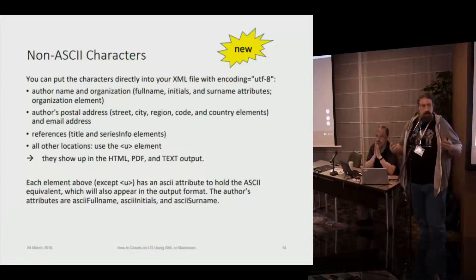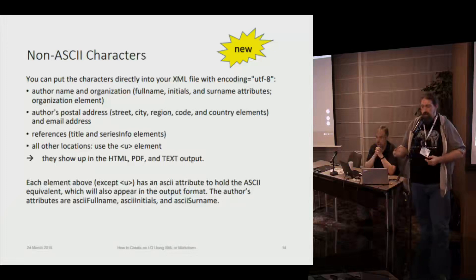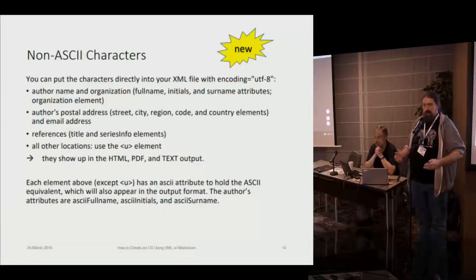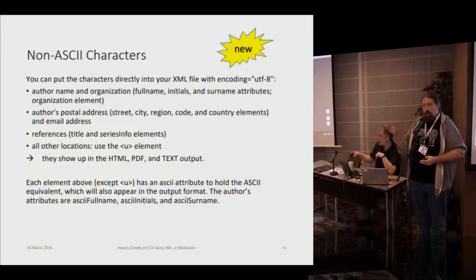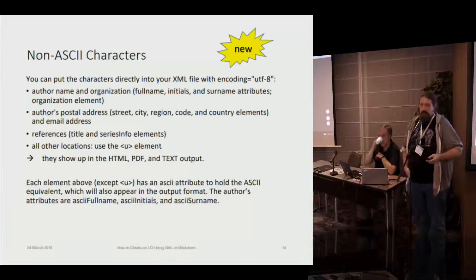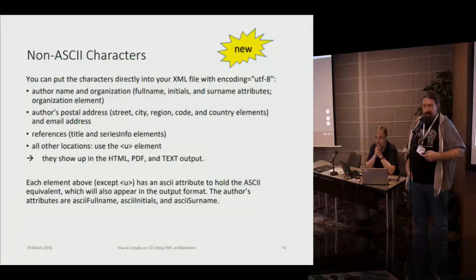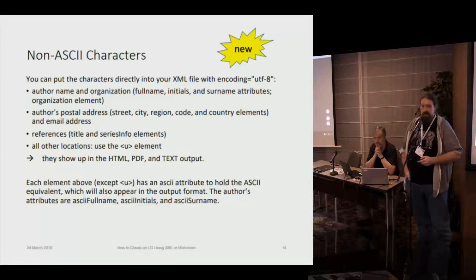The ASCII representation helps with searching, since not all tools handle Unicode correctly. It helps with rendering in some places where UTF-8 may not be universally available yet. The new system does allow you to put Unicode just about anywhere. The one requirement is using the U-element, which helps validate and be able to put in some additional information — such as Unicode string plus the Unicode code points relevant for that — so anyone whose renderer can't display it still has the description. The U-element is brand new with V3 updates and is not in RFC 7991 itself, but in the updates Henrik has been working on.